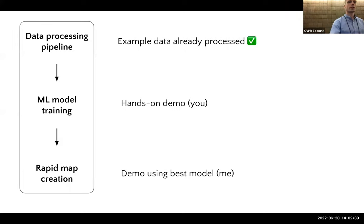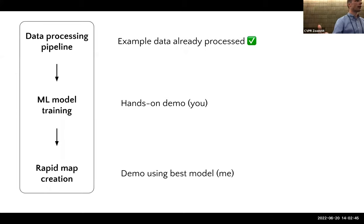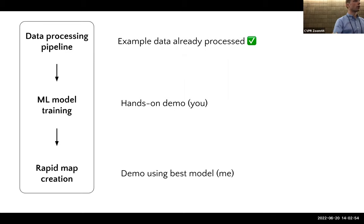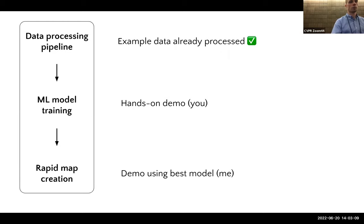OpenMapFlow has three components. We are not going to demo the data processing pipeline today — that takes more time. Instead we'll use example data that's already been processed. The machine learning model training is what everyone with a computer will have the ability to do. Rapid map creation will be me picking the best model and making a larger map using our deployed architecture.